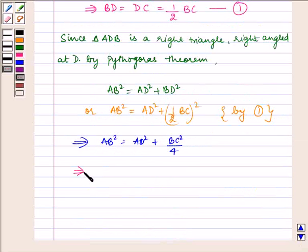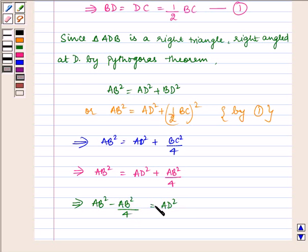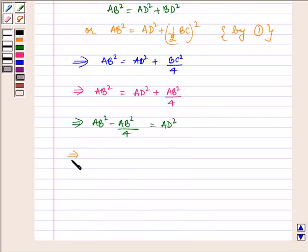This implies AB square is equal to AD square plus BC square by 4. This implies AB square minus AB square by 4 is equal to AD square. This implies 3 AB square by 4 is equal to AD square.